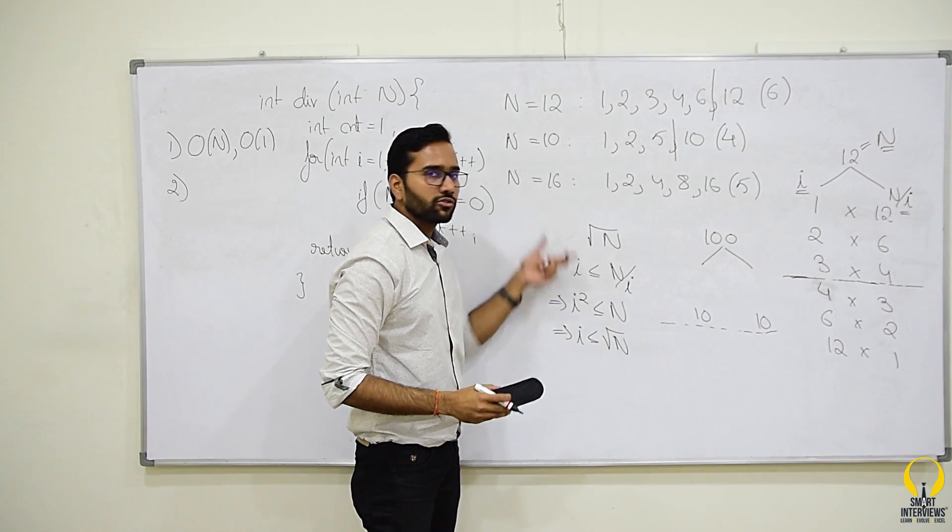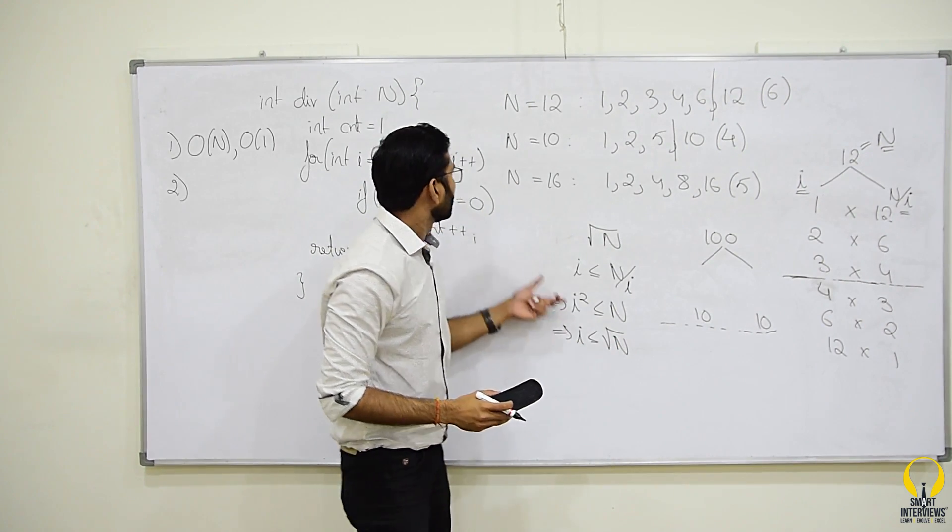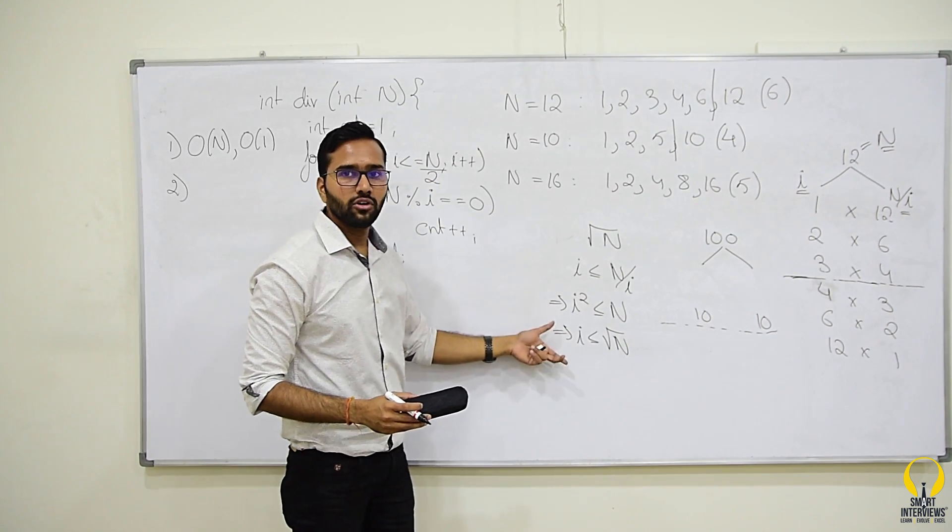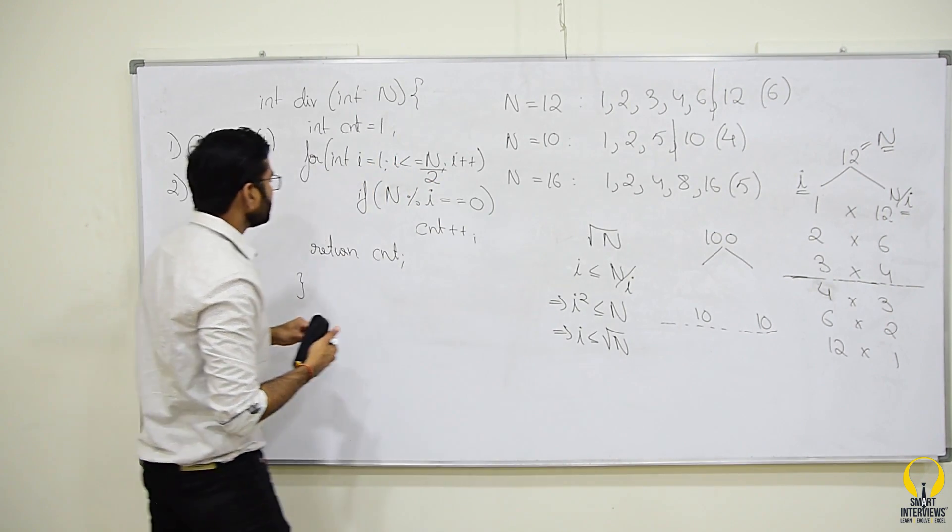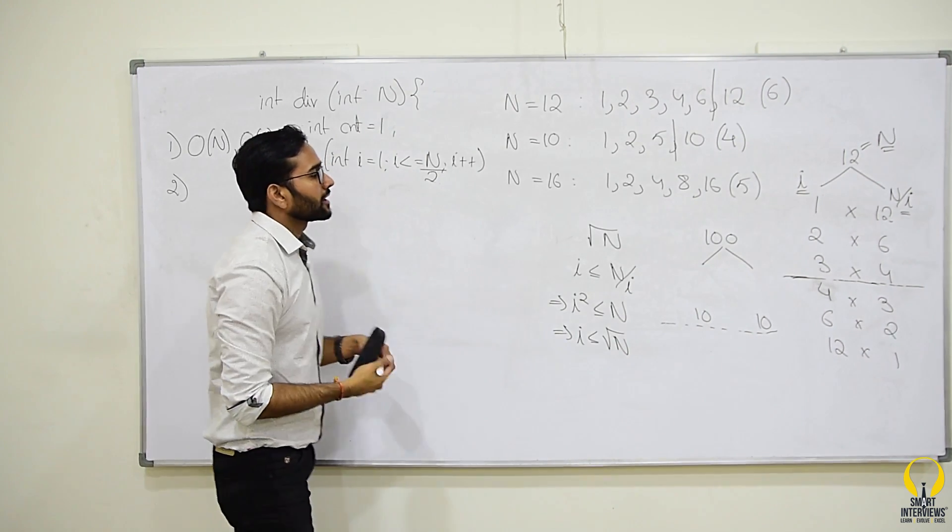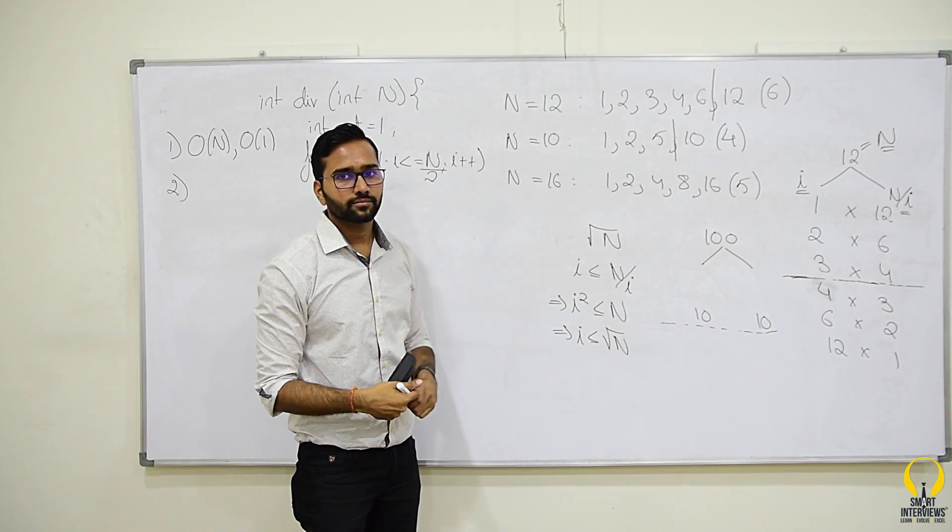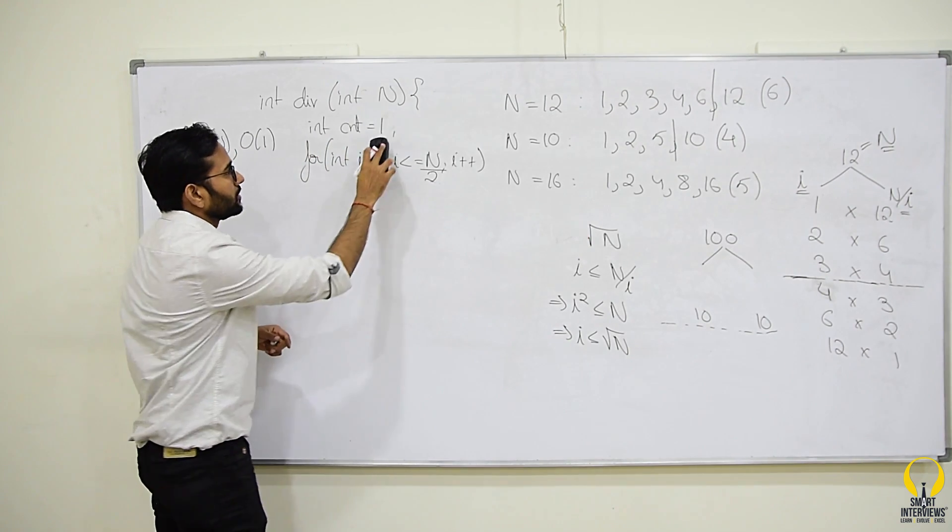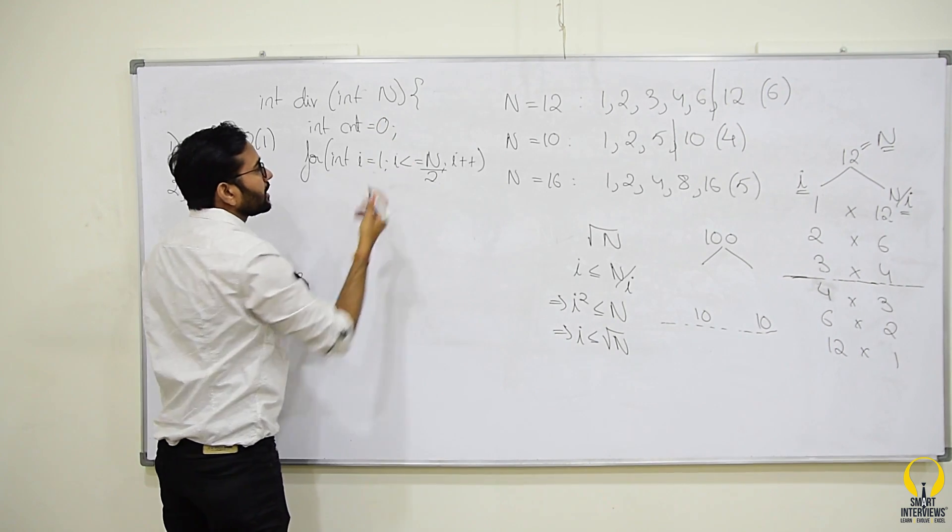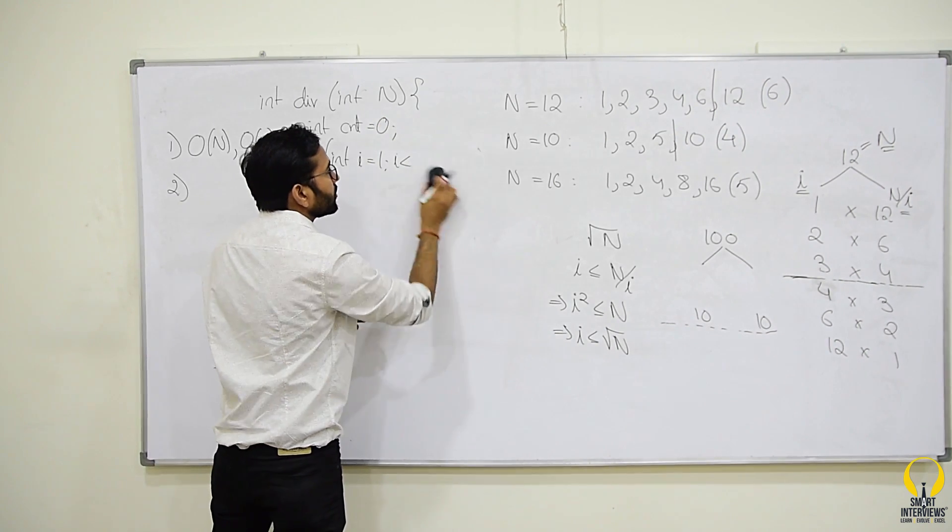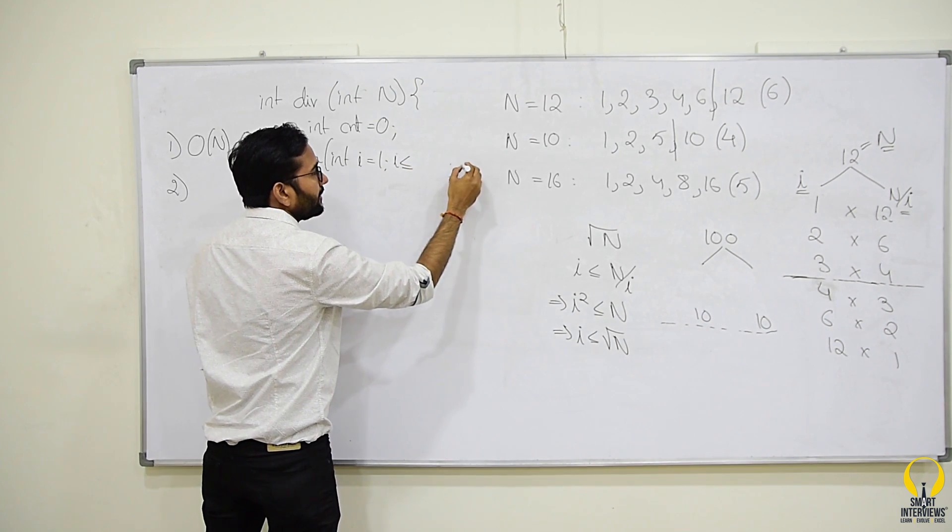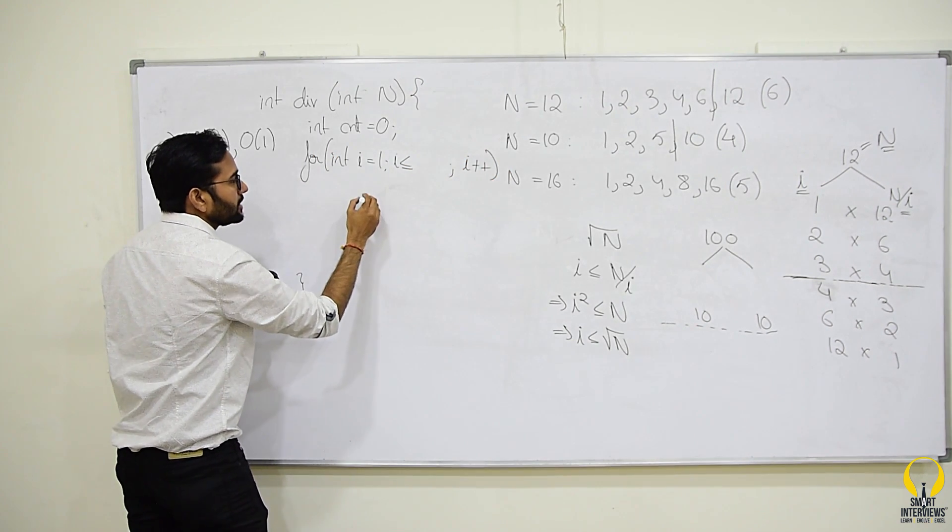So, in our solution, we should not go from 1 to n/2 or 1 to n, we should go from 1 to root n. So, try to modify this code, see if you can convert this logic into code. How do we do that? We will take count equal to 0, iterate from 1 to root n and then we should increment i.